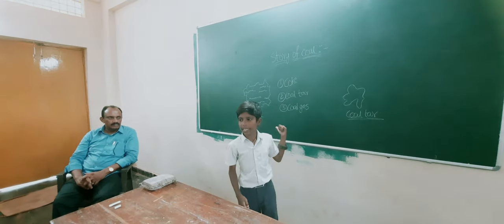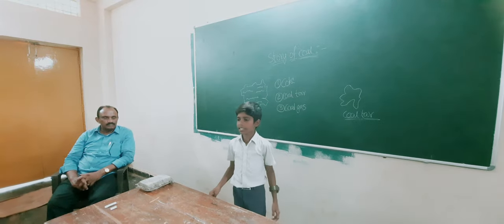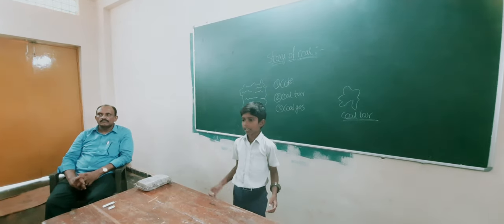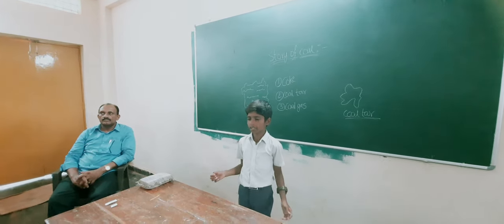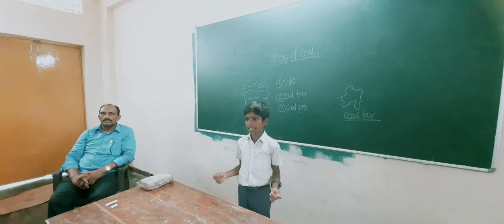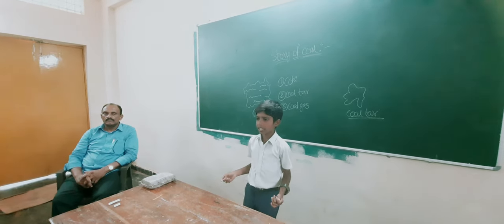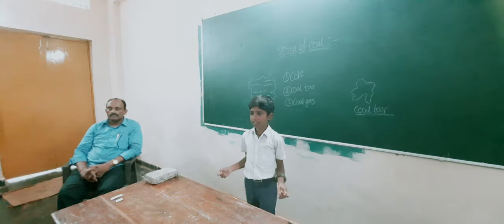Number 3, coal gas. Coal gas is produced in industry during processes to get coke. It is used as a fuel in many industries situated near the coal processing plants.